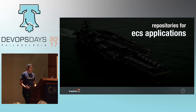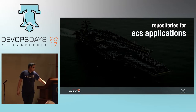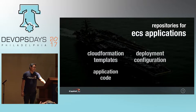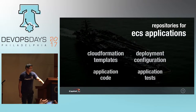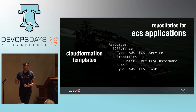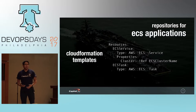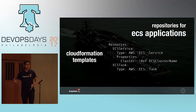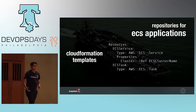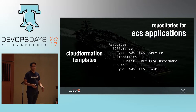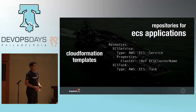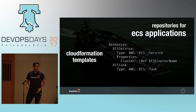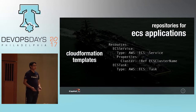Moving on to our application repositories, these are laid out very similarly: CloudFormation templates, deployment configuration, and of course our application code and tests. For ECS applications, we have a persistent stack template with things like your load balancer, Route 53 records, SNS topic — anything you wouldn't want to go away during a blue-green deployment. Our immutable stack, instead of an auto-scaling group and launch configuration, contains an ECS service and task definition.